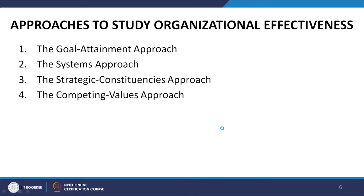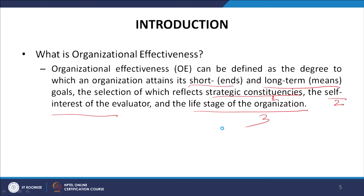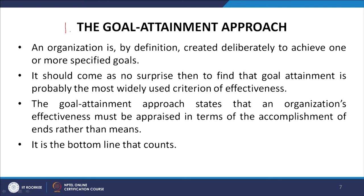There are four approaches to studying organizational effectiveness. The first is the goal attainment approach, the second is the systems approach, the third is the strategic constituency approach, and the fourth is the competing values approach.